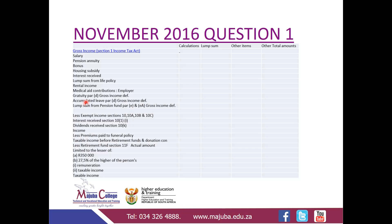I'll highlight the differences between capital and revenue items at a later stage in a dedicated presentation on gross income. You're going to start with salary, and then take the pension annuity into account. This information was per the November 2016 question paper. From salary through to medical aid contributions, all those items are likely to be classified as gross income and will be included in that column.